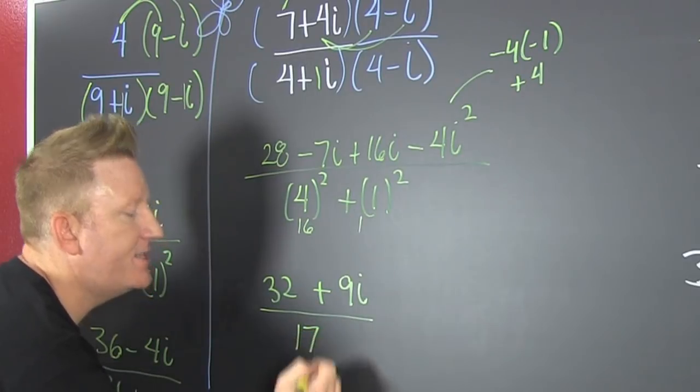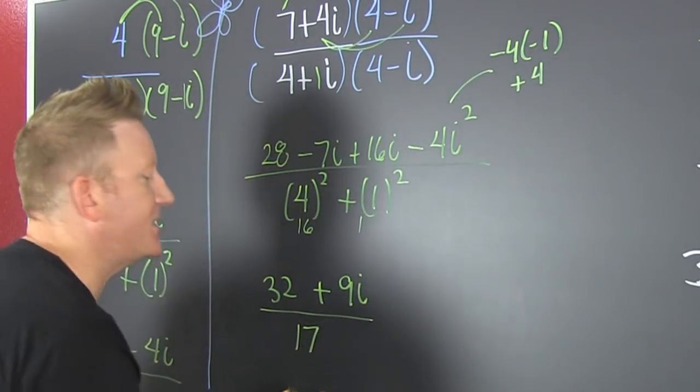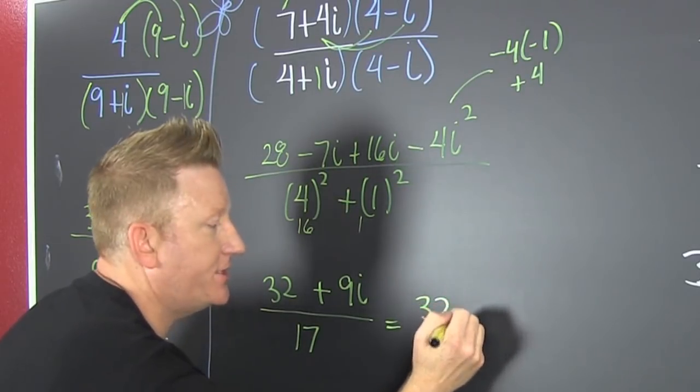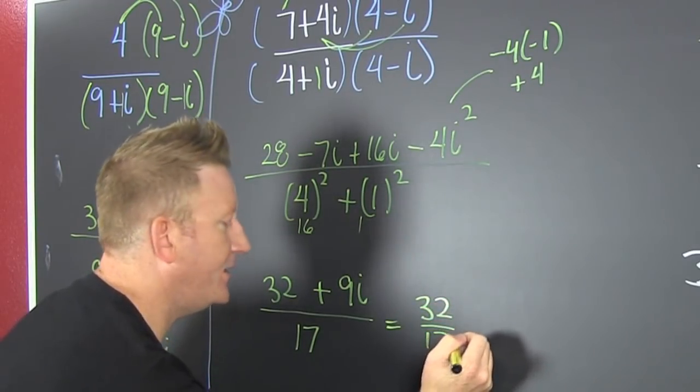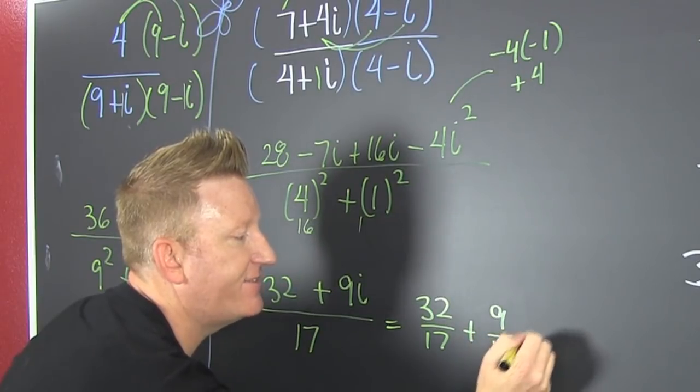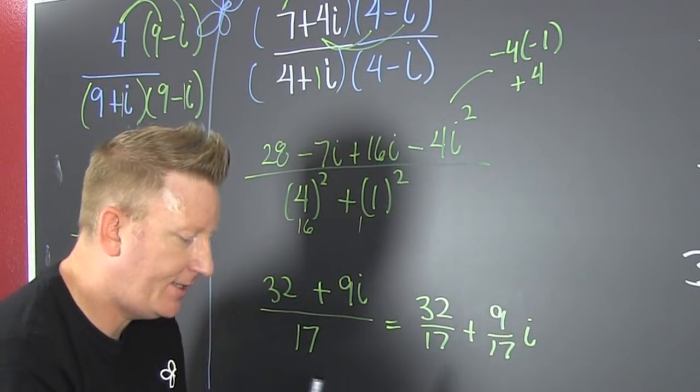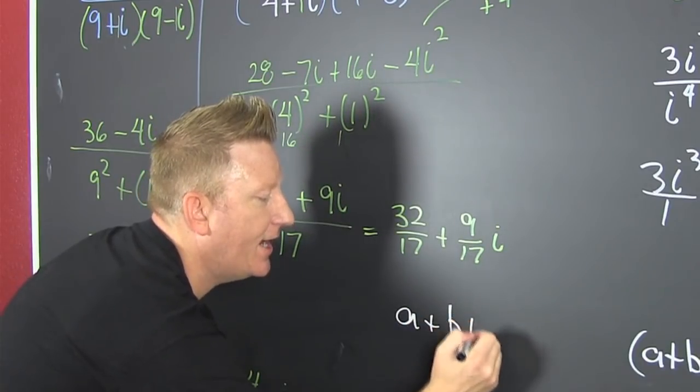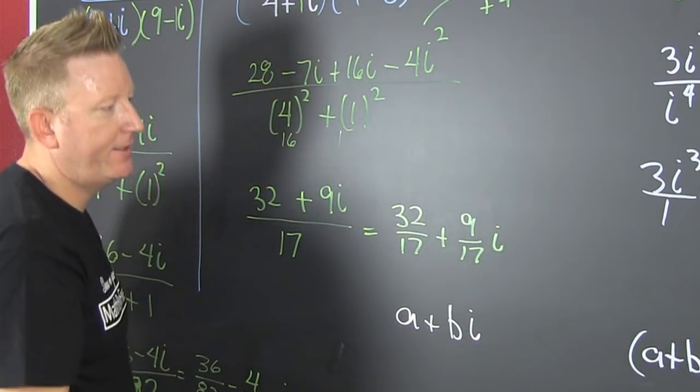So then that's a 16 and a 1. So then that's all over 17. But once again you gotta split it. Alright. Yeah. So that's a 32 divided by 17 plus a 9 divided by 17i. I have to have my answer in A plus Bi.